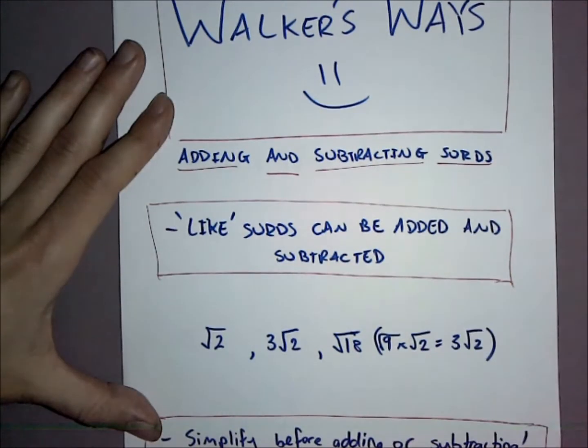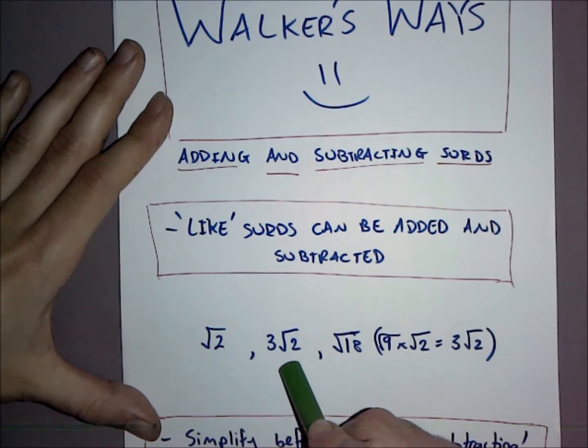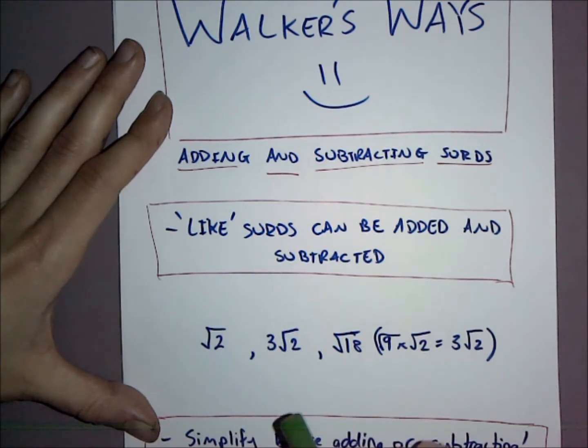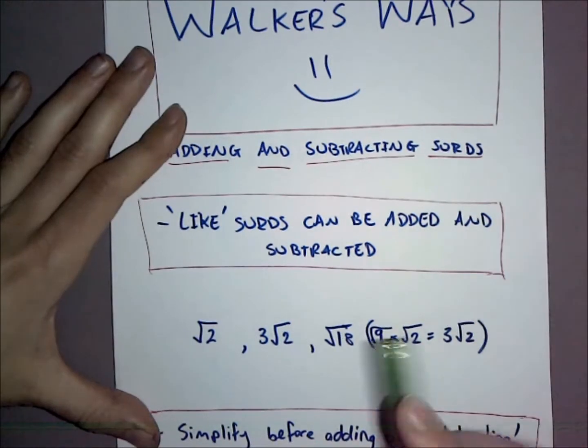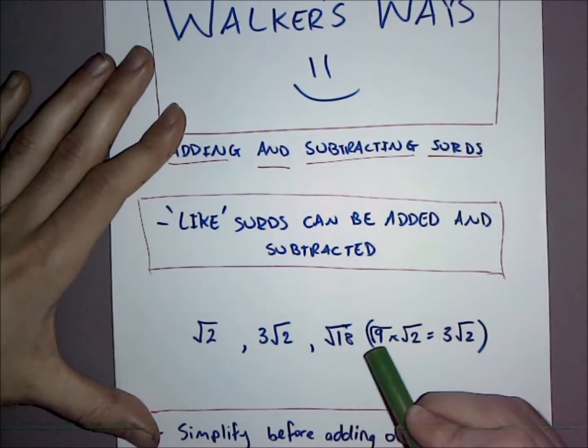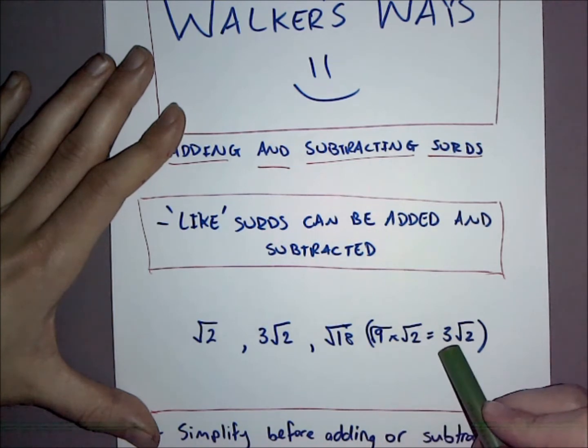A few examples of like surds are √2 and 3√2, so I could add or subtract these from each other. Now sometimes it's not going to be as easy to see unless you simplify. For instance, √18 can be broken down into √9 × √2. The square root of 9 is 3, so it'll be 3√2.